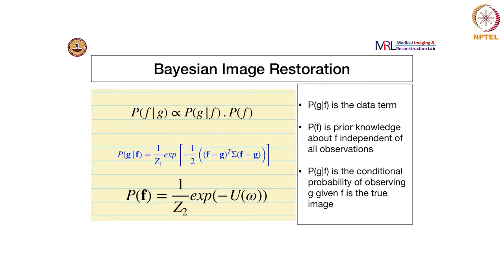Other than that, we have not used any constraints. In the probabilistic framework — the Bayesian image restoration framework — we are able to incorporate additional constraints on F, for instance, smoothness constraints on F.